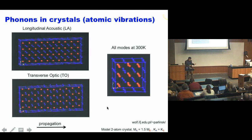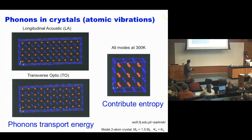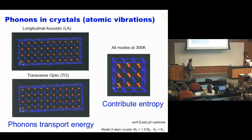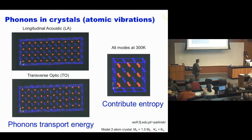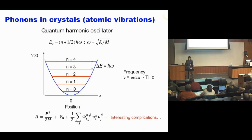There are two important concepts to take away. First, phonons are critical to understanding the transport of energy - the atomistic origin of thermal conductivity in materials. Second, these atomic vibrations or phonons contribute a lot to the disorder in the material - they are a big source of entropy. For that reason, they're critical to understand thermodynamics. Phonons are actually the dominant source of entropy in most solids at ambient temperature.